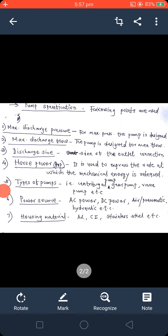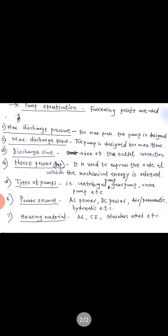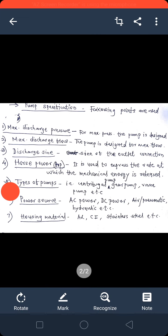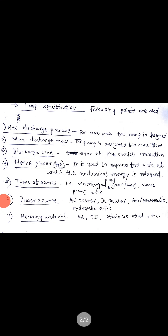Next we are going to discuss pump specifications. First is maximum discharge pressure. The pump is designed for a particular pressure, and according to that pressure only will that pump operate. If the pump is designed for 2 bar or 3 bar pressure, that pump will not operate for 5 bar or 10 bar pressure, for example. Second is maximum discharge flow - the pump is designed for a maximum flow.